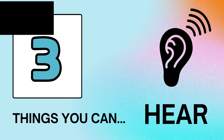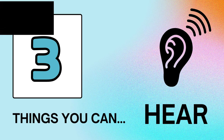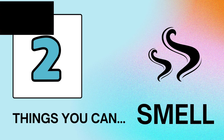Number two is smell — things that make us calm down by smelling. It could be incense if you burn it, the smell of lavender essential oil, a cup of tea, the smell of freshly cut grass, the smell of someone getting their roof done, or the smell of your favourite flowers. Different fragrances can trigger a memory that helps you relax.